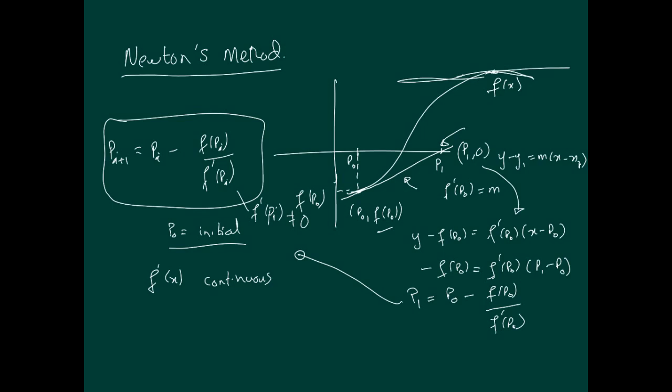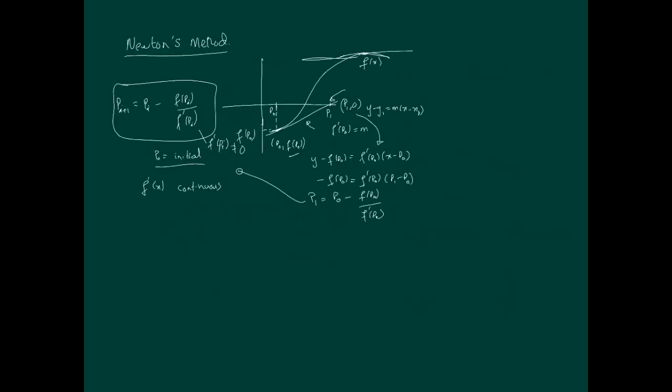In terms of the derivative issue, we can overcome it by using a variation of Newton's method, which is called the secant method. One of the ways to overcome the derivative is to use the approximation for the derivative, which is: f'(p_i) is approximately f(p_i) minus f(p_{i-1}) divided by p_i minus p_{i-1}. That is the approximation of the derivative. It's the change in the output divided by the change in the input, or the change in the function divided by the change in the independent variable.